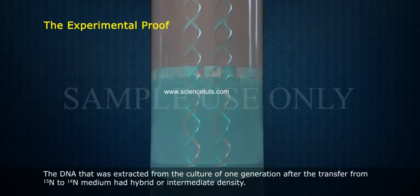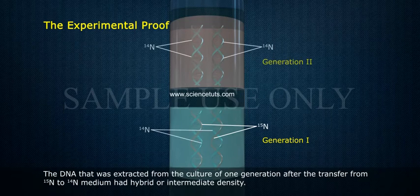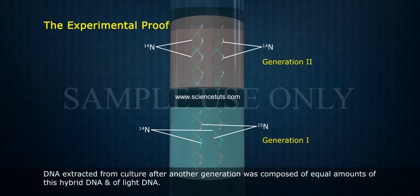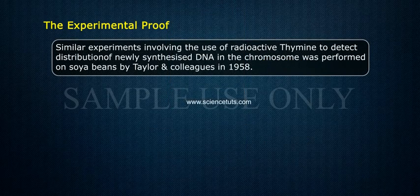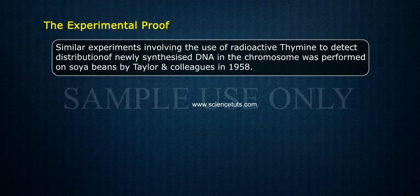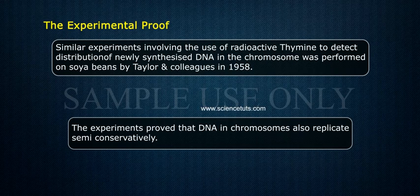The DNA extracted from the culture one generation after transfer from 15-N to 14-N medium had hybrid or intermediate density. DNA extracted from culture after another generation was composed of equal amounts of this hybrid DNA and light DNA. Similar experiments using radioactive thymine to detect the distribution of newly synthesized DNA in the chromosome were performed on soya beans by Taylor and colleagues in 1958. These experiments proved that DNA in chromosomes also replicates semi-conservatively.